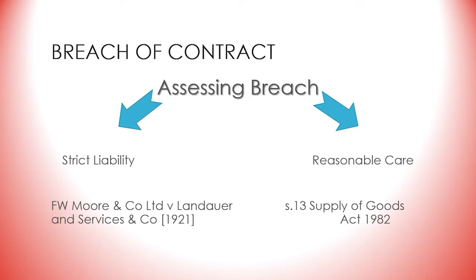An illustration is the case of Moore & Landauer from 1921. This involved a contract to deliver 3,000 tins of fruit to be packed in cases containing 30 tins each. When some of the consignment was delivered packed in cases of 24, this was held to be a breach of contract even though the performance was as valuable as the one promised — it was not what was promised, and the buyer could reject the whole consignment.